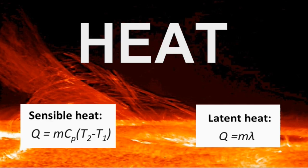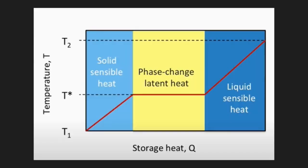Heat can be further classified into two categories: sensible heat and latent heat. Sensible heat is given by the formula q = m·cp·ΔT, where m is the mass, cp is the specific heat capacity, and ΔT is the temperature difference. Latent heat is given by q = m·λ, where m is the mass and λ is the latent heat capacity.